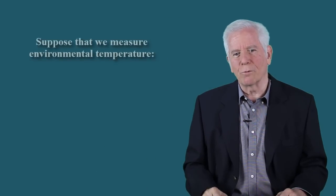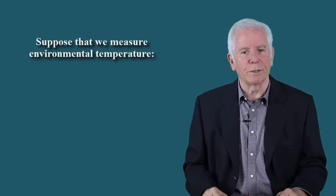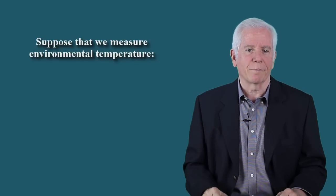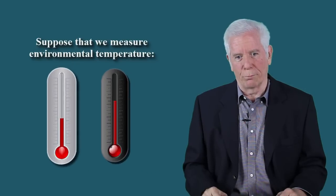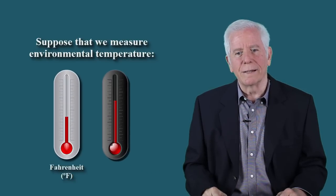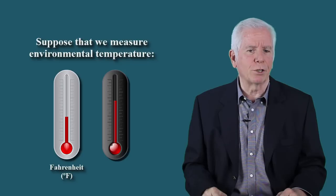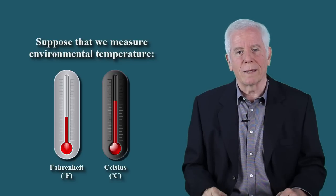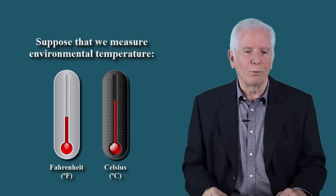Suppose that we measure environmental temperature for 10 consecutive days. We use two thermometers, one that delivers readings on a Fahrenheit scale, another which measures temperatures on a Celsius scale. At the end of the measuring period, we have 10 pairs of measurements.